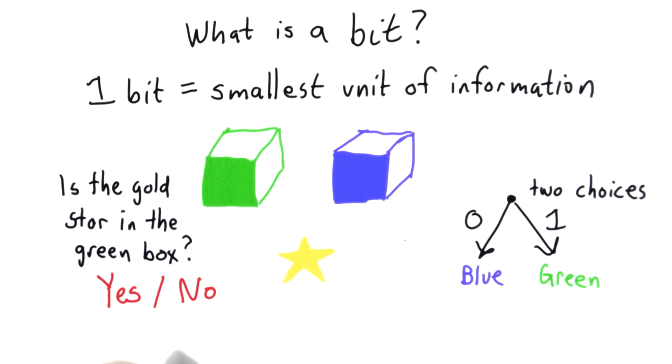So when we think about bits in computing, we don't usually call them yes or no. We call them zero and one. Zero more readily maps to no and one to yes. So I switch blue and green here.